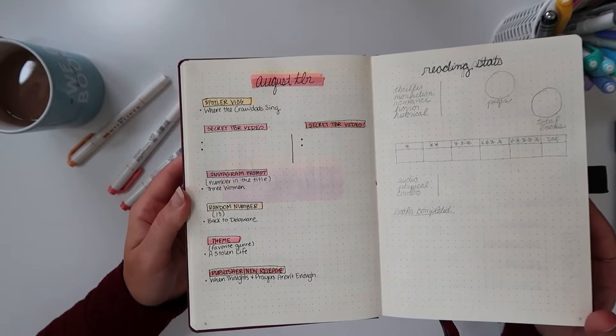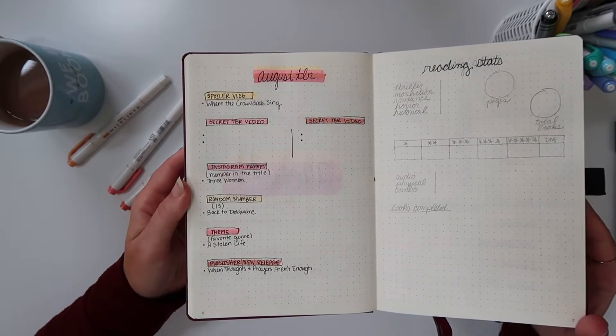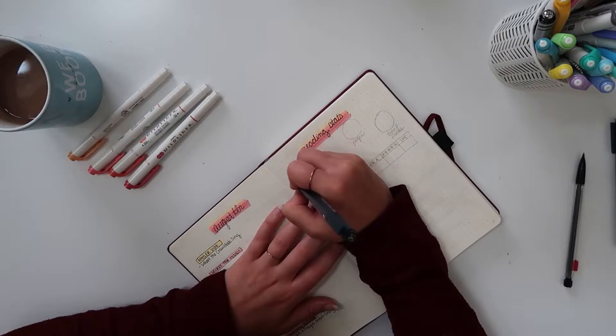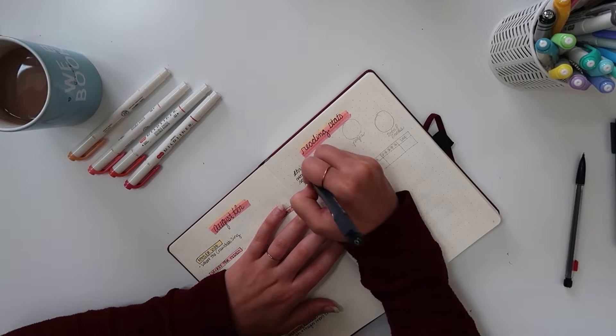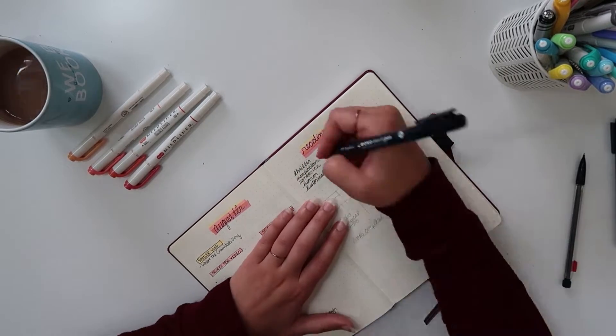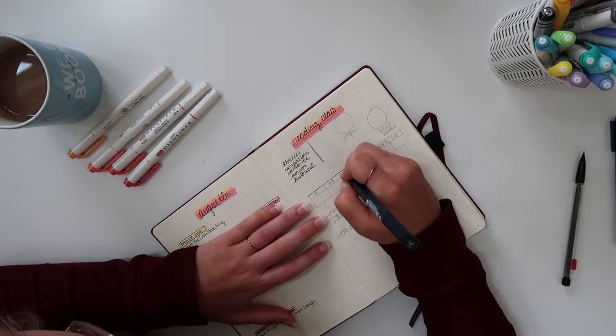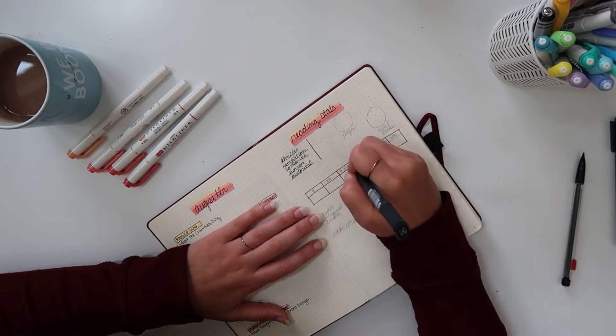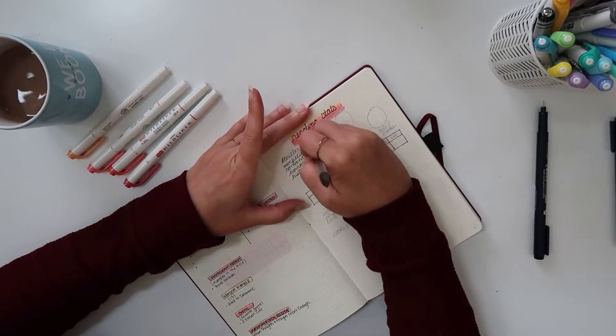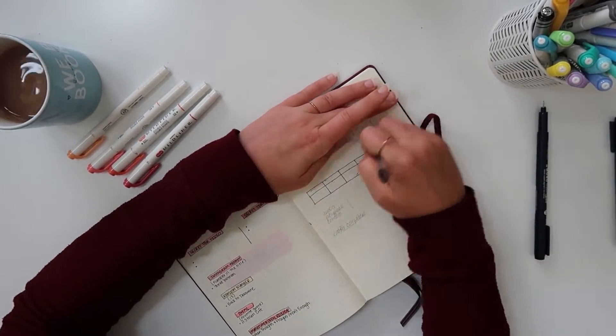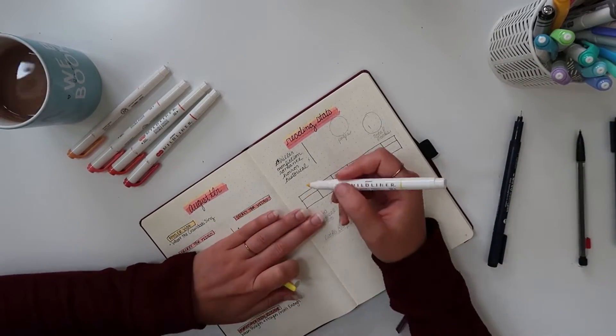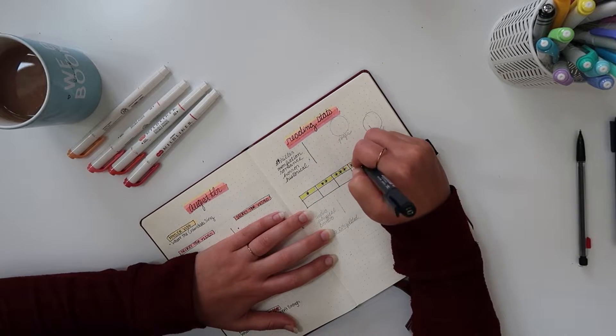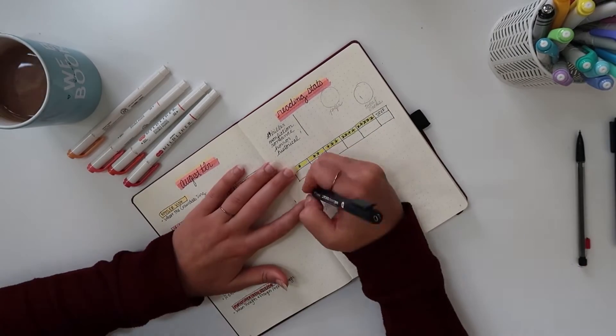For my reading stats I'm just keeping track of the few genres that I'm reading that month, my total pages, the total number of books, the star rating, whether I DNF'd it, if I read it on physical or audio or a combo. And then I'm just going to write my final book list and my final video list there. I'm hoping that helps a little bit with just my wrap-ups in general. Sometimes I feel like if I go too much into detail with my wrap-ups they become extremely intimidating.